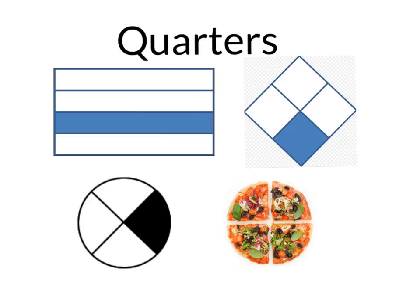And here are some pictures that show quarters. Here, this rectangle has been divided into four even parts, and each part is the same size. This coloured in bit shows one quarter. Here, a diamond has been cut into four even parts, and this piece shows one quarter.